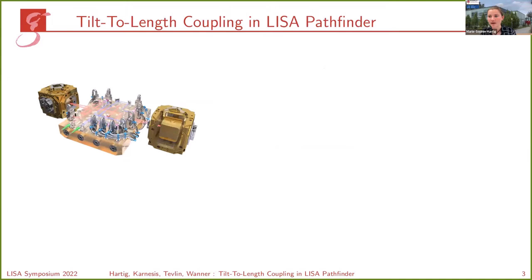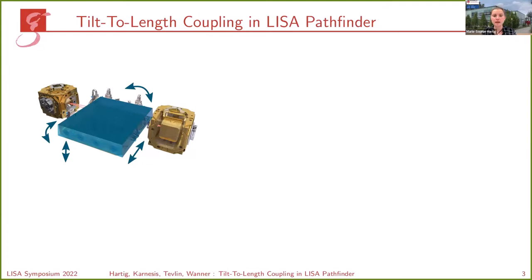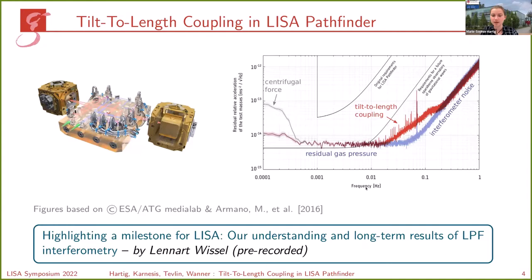In terms of LISA Pathfinder, we wanted to measure the relative distance changes of the two test masses — the golden blocks inside the electrode housing — or the relative acceleration. Therefore there was an optical bench in between with all the optical setup. Tilt-to-length coupling in LISA Pathfinder was mostly the jitter of the spacecraft and hence the optical bench with respect to the test masses, which can also be interpreted as a jitter of the test masses with respect to the center of mass of the spacecraft.